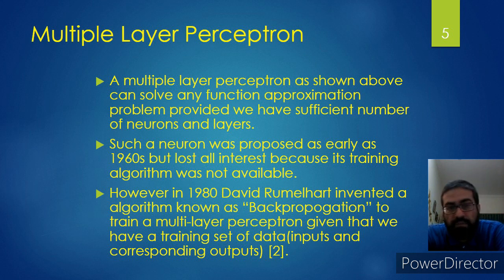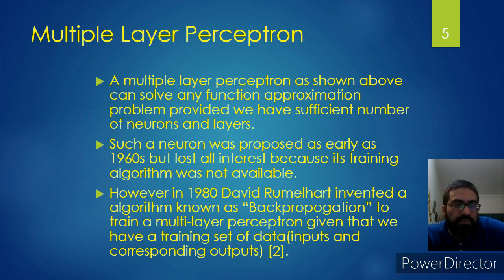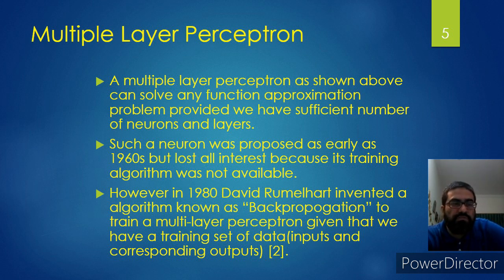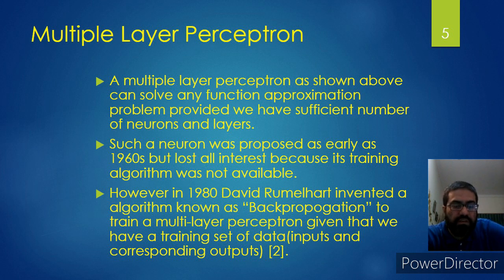What is important or exciting about this multilayer perceptron? It can be used to solve any function approximation problem, provided there are sufficient numbers of neurons in the hidden layer and the output layer. Such a network was proposed as early as the 1960s, but there was not enough computing power at that time. The type of technology we have today was not even a dream at that time, and computing technology was far more inferior to what it is today.